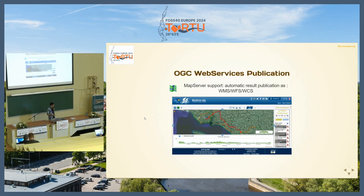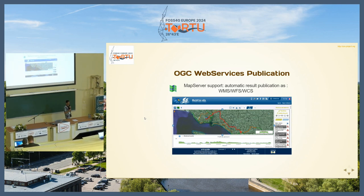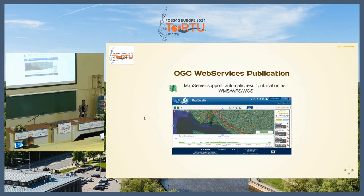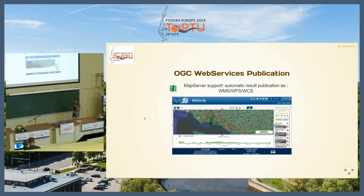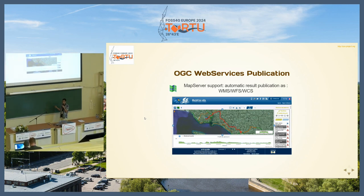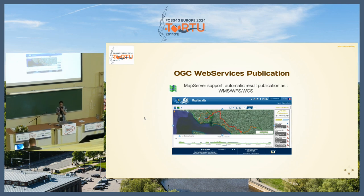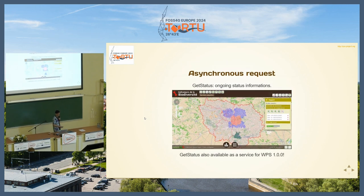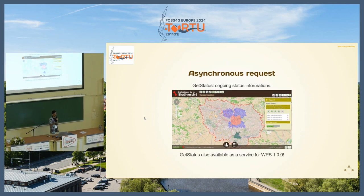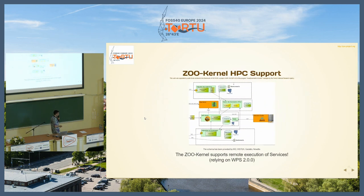Since the beginning we integrated with MapServer's C library so that if your service is outputting any GIS-related data you will be able to automatically get it published as WMS, WFS, or WCS. Also, since WPS 1 we have the get status service — renamed as a request in WPS 2 — which is also available in OGC API Processes Part 1 core.